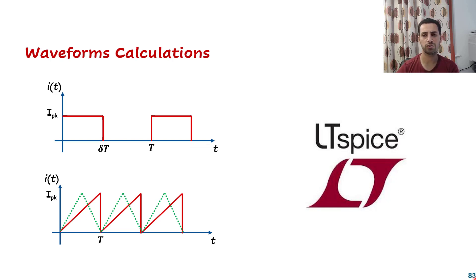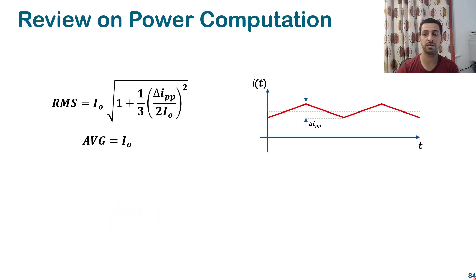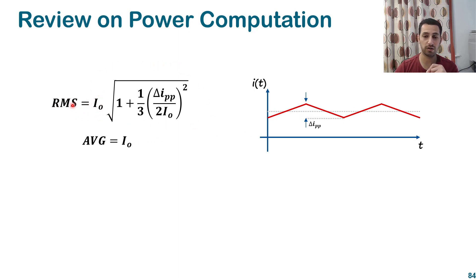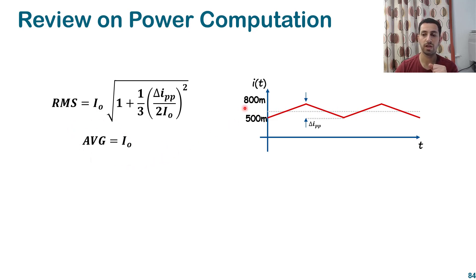Today we are going to cover two examples. The first example is a triangular waveform with an offset. We learned that we can decompose the two signals and get the average value for each, then get the RMS value for the new waveform. The average value I0 is the middle point, and the RMS value is in terms of the average value and the peak-to-peak value. In this example, the peak-to-peak is from 500mA to 800mA. The average value is the middle point between 500 and 800.